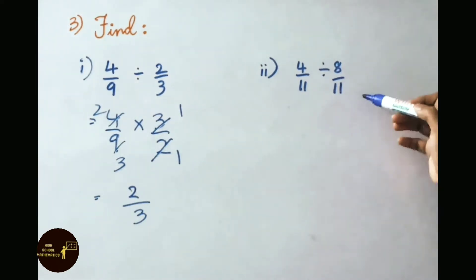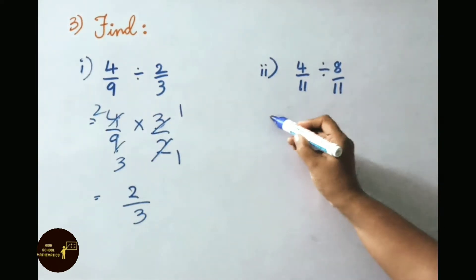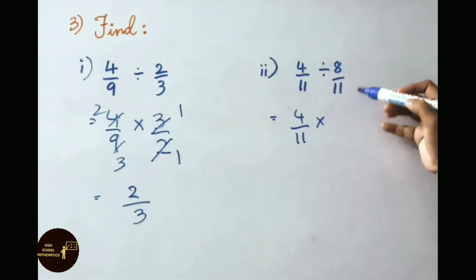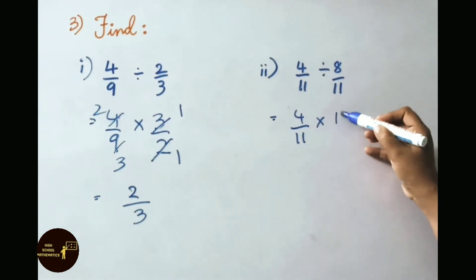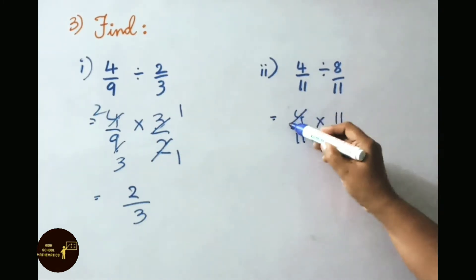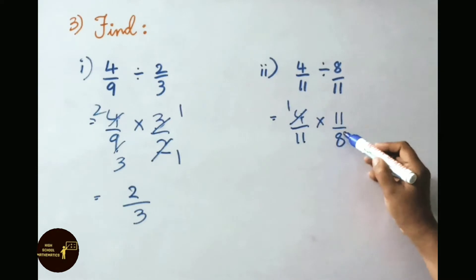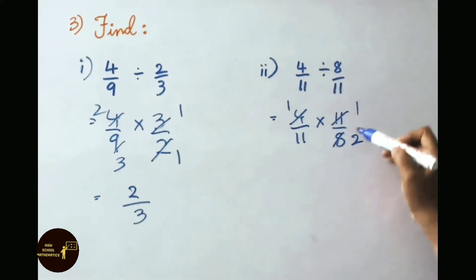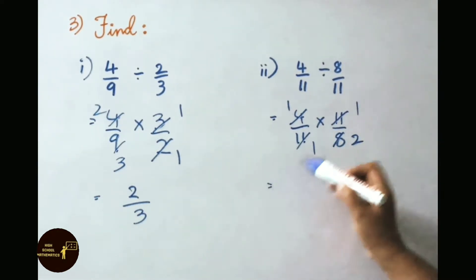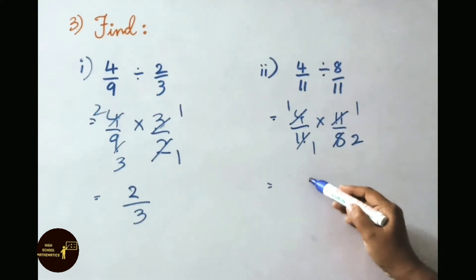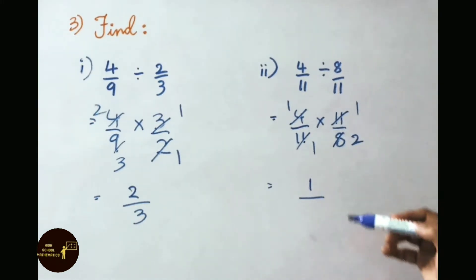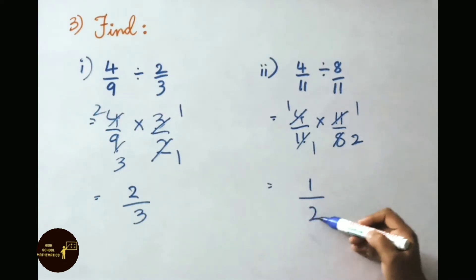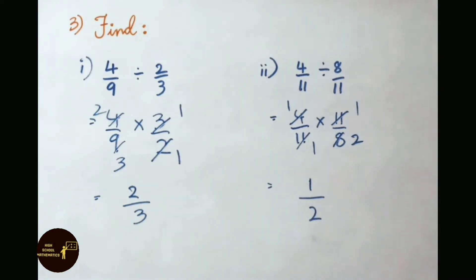See the next sum: 4 by 11 divided by 8 by 11. That equals 4 by 11 into the reciprocal of 8 by 11, which is 11 by 8. Cancel: 4 into 8 gives 2, and 11 into 11 gives 1. Multiply the numerators: 1 into 1 is 1. Multiply the denominators: 1 into 2 is 2. So the answer is 1 by 2.